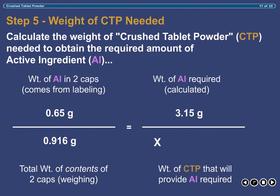Inserting these numbers into the formula and solving for X tells us that 4.439g of capsule powder derived from the contents of the commercially prepared five-grain quinine sulfate capsules will provide the 3.15g of quinine sulfate needed to compound the prescription.